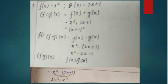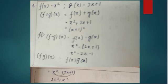Sixth question: f(x) = x² and g(x) = 2x + 1. For f + g: f(x) + g(x) = x² + 2x + 1. For f - g: f(x) - g(x) = x² - 2x - 1. For f·g: f(x)·g(x) = 2x³ + x². Work through each operation the same way.